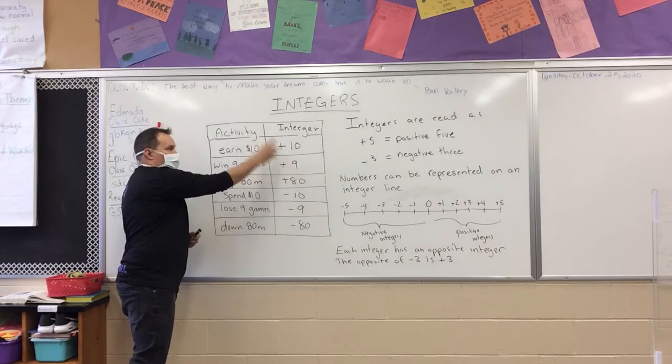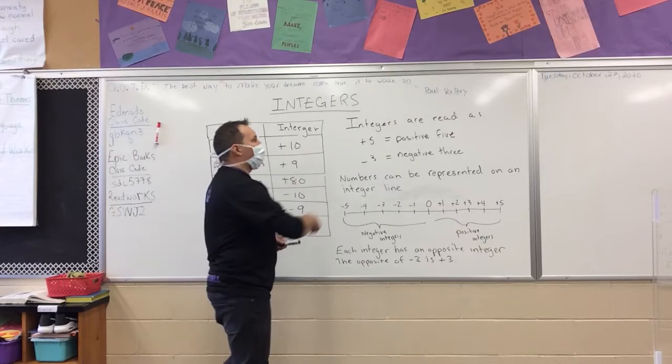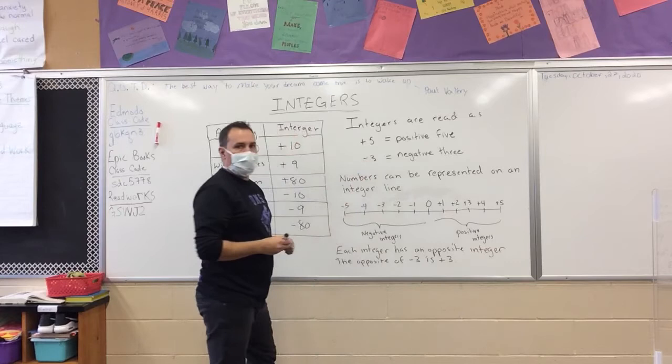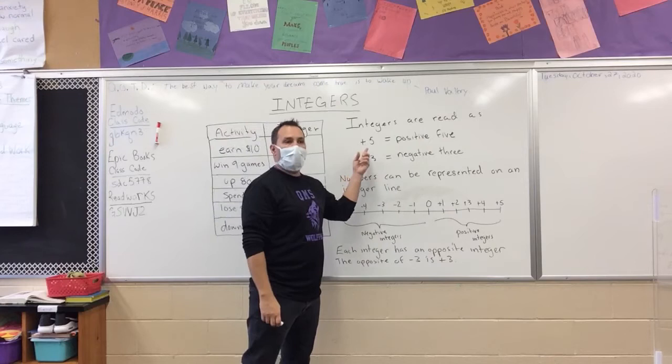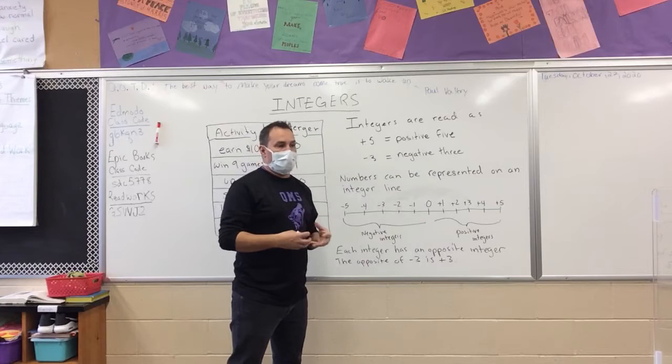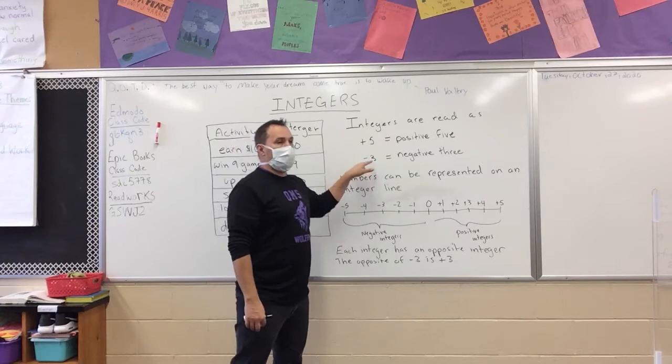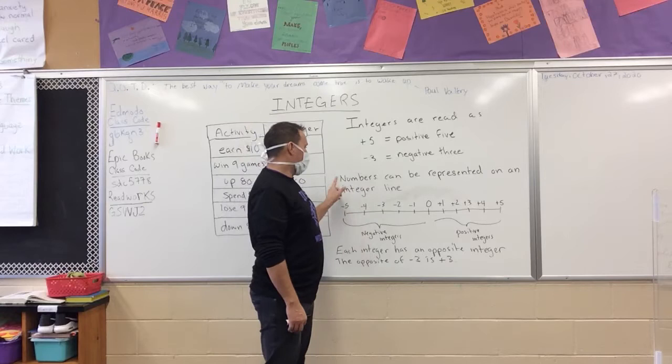As you go through and read integers, we read them this way: integers are read as positive five or negative three. We say positive and negative — we don't say minus three or plus five, because that tells us something else. If you say plus five, it means you're adding five to something. Positive refers to a positive number or positive integer. If you say minus three, that means you're subtracting three from something.